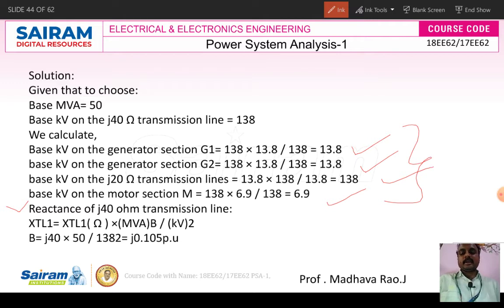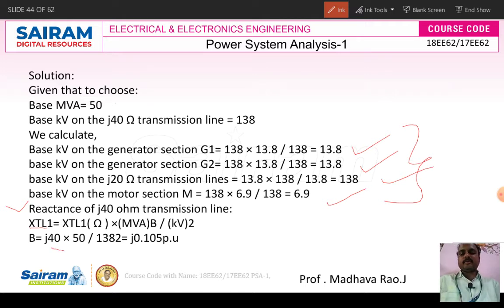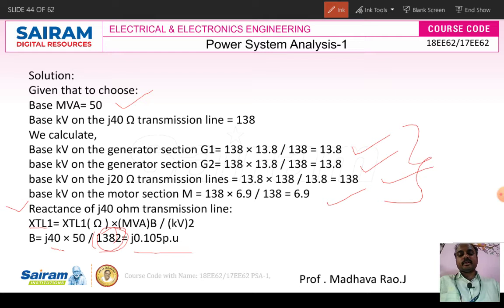The reactance of the 40-ohm transmission line is calculated using the formula: new reactance = old reactance × (MVA_base / kV²_base). Substituting j40 ohms, MVA_base = 50, and kV_base = 138 kV, we get the reactance of the 40-ohm transmission line as j0.105 per unit. Similarly, we calculate reactances for generator 1, generator 2, the 20-ohm transmission line, and the motor.